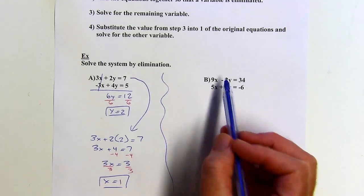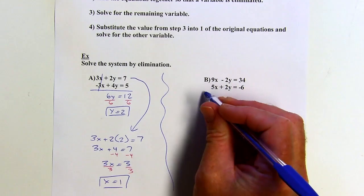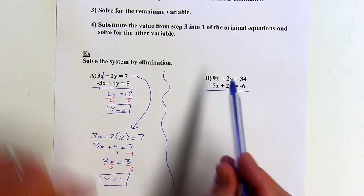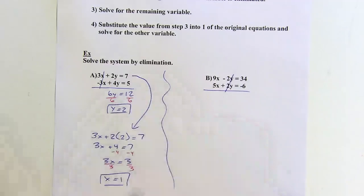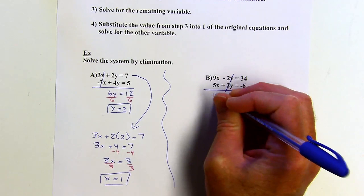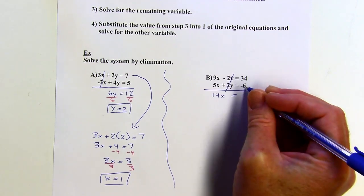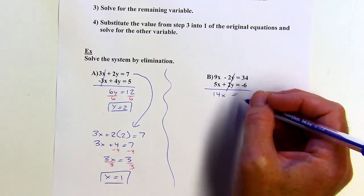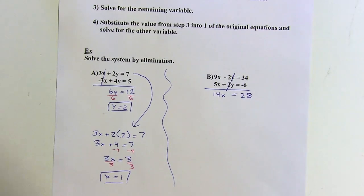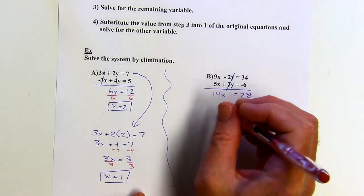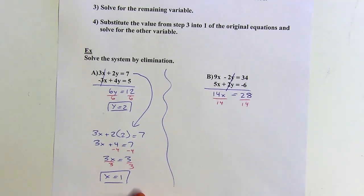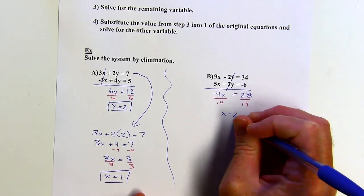Next problem. Again, the y's are already opposites, so I don't need any multiplication. These first two problems are easier because opposites are already set up. Adding: 9x plus 5x is 14x, and 34 plus negative 6 — that's the same as 34 minus 6 — gives 28. So 14x equals 28, and dividing both sides by 14, x equals 2.